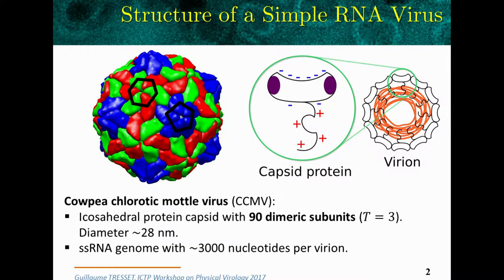The genome is made of about 3,000 nucleotides per particle. The capsid is made of these proteins — here one protein with hydrophobic patches, and the body is negatively charged, which can be tuned by the pH. The flexible arm is cationic and makes the interaction with the genome.